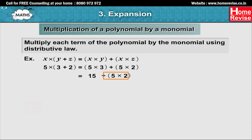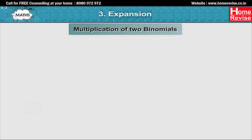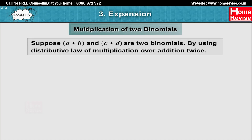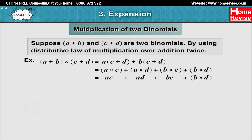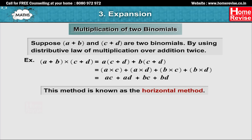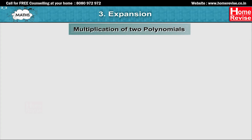And 5 into (3 plus 2) equals 5·3 plus 5·2, that equals 15 plus 10, which equals 25. Multiplication of 2 binomials: Suppose a plus b and c plus d are 2 binomials. By using the distributive law of multiplication over addition twice, we find: (a plus b) into (c plus d) equals a·(c plus d) plus b·(c plus d), which equals ac plus ad plus bc plus bd. This method is known as the horizontal method.